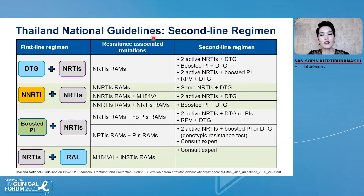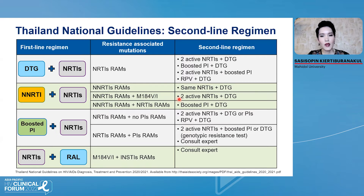This table shows our Thailand national guidelines — the recommendation for the second-line regimen. In Thailand in the past, we used first-line regimens as NNRTI-based regimens. So if the patient has a failing NNRTI treatment regimen, it depends on resistance-associated mutations. If the patient has only NNRTI resistance-associated mutations, the second-line regimen can use the same NRTIs plus dolutegravir. If the patient has both NNRTI resistance-associated mutations plus M184V, we recommend two active NRTIs by genotype plus dolutegravir. If the patient has many multiple mutations — both NNRTI plus NRTI — we recommend boosted PI plus dolutegravir.